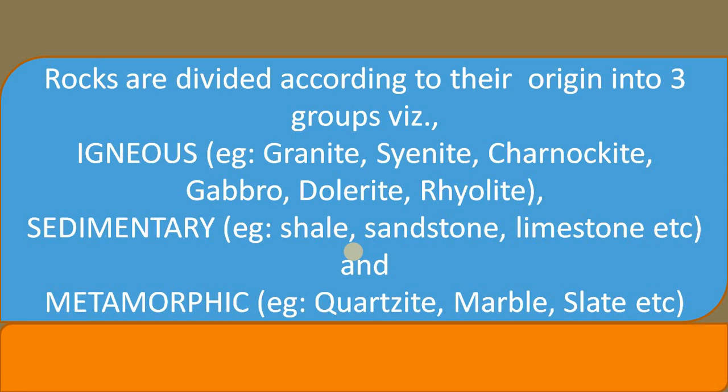And sedimentary rocks — examples: shale, sandstone, limestone, etc. — all these rocks belong to sedimentary rocks. And metamorphic rocks, which include quartzite, marble, slate, etc. So rocks are divided into three groups, namely igneous, sedimentary and metamorphic, based on their origin.